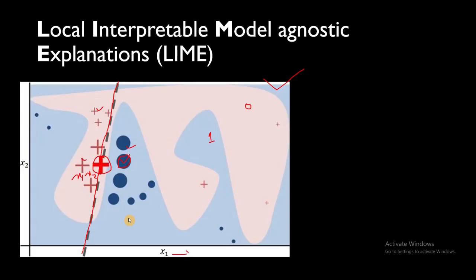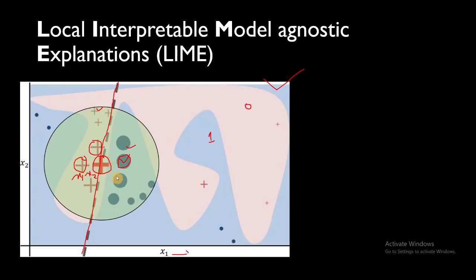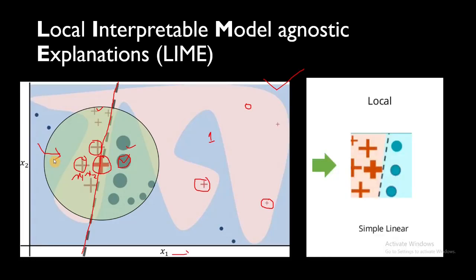You can see this line is the linear model that LIME creates when we zoom in. One important thing is the size of each point — it refers to how much weightage is given to it. Points close to the explanation point are given higher weightage, and points farther away are given lesser weightage, hence their smaller size. This kernel size is a hyperparameter in the LIME algorithm that you need to decide.